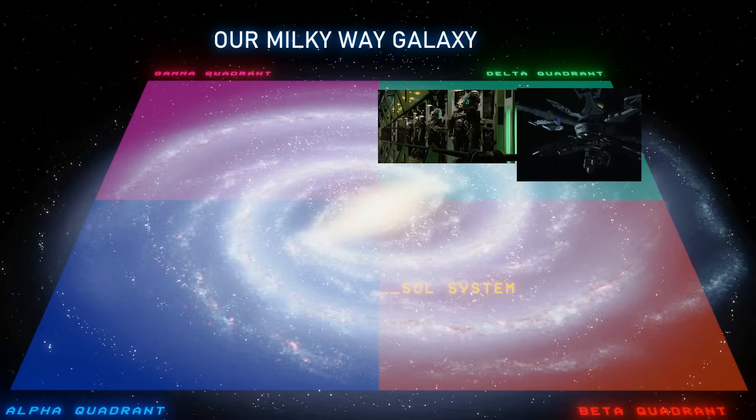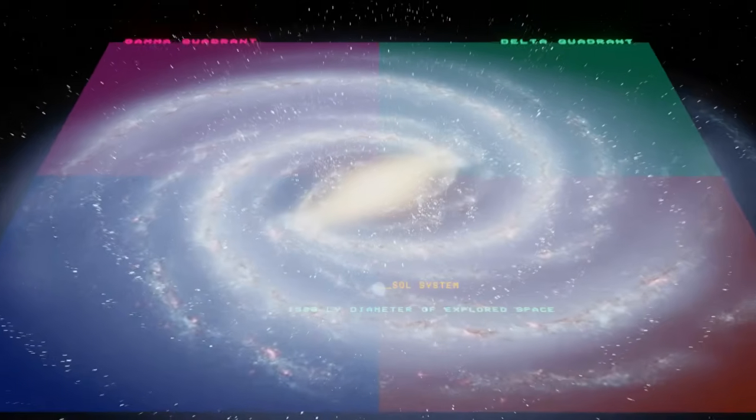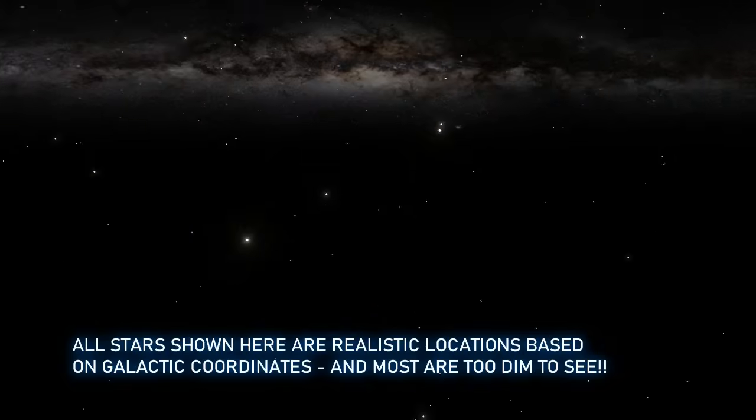The Gamma Quadrant is mostly unexplored and unknown until the wormhole at Bajor is discovered, which leads to the Gamma Quadrant. The Gamma Quadrant is home to the highly advanced and dangerous civilization known as the Dominion, and the discovery of the Dominion would lead to an enormous war with the Alpha Quadrant powers.